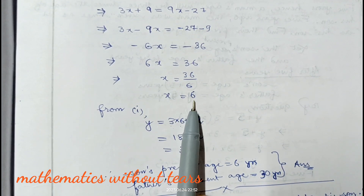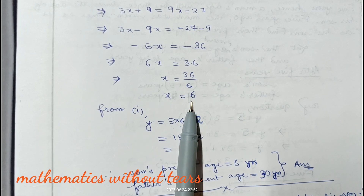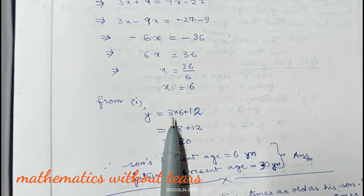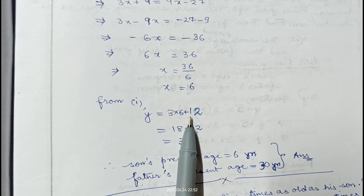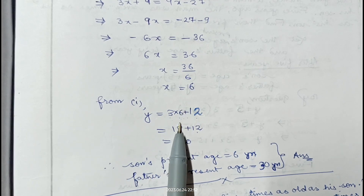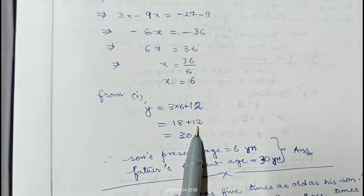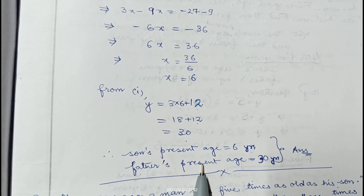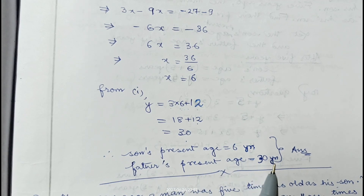From equation 1, y equals 3x plus 12. Replacing x with 6: y equals 3 into 6 plus 12, which is 18 plus 12, giving 30. Therefore son's present age is 6 years and father's present age is 30 years.